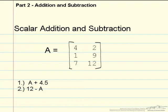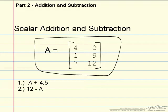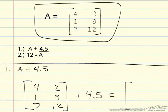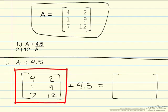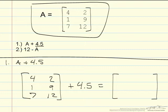With scalar addition and subtraction, you have the matrix and then you have your own individual scalar. I have two example problems set up for this. Problem number one is A plus 4.5. A is our matrix here and 4.5 is our scalar. So let me set this problem up for you. Here is the problem.